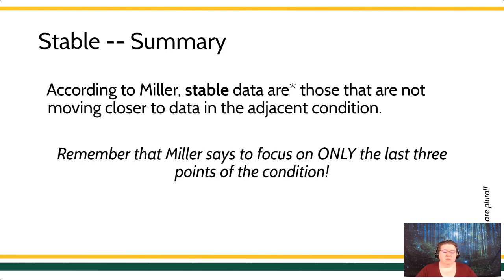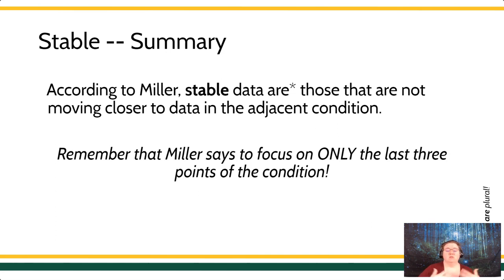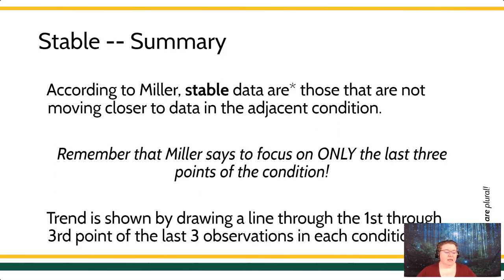In using Miller's approach to visual analysis, you only focus on the last three points of each condition. This is because treatment can sometimes take a moment to take effect, or as we saw with Dr. D, you can have a huge treatment effect that then starts to decrease because it was temporary. So you want to make sure that you are waiting for the behavior to reach a kind of steady natural state before you make any condition changes. We draw our trend line in Miller's approach by drawing from the first through the third of each condition — the last three points.